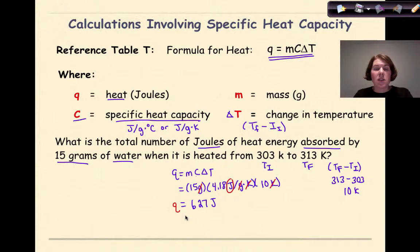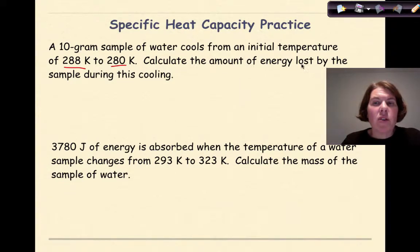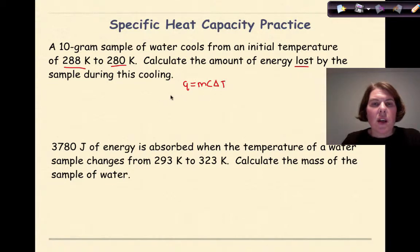The result is 627 joules of energy absorbed. Because this is a positive value, we note: positive value → energy absorbed. Next, Example 2: A 10-gram sample of water cools from an initial temperature of 288 K to 280 K. Calculate the amount of energy lost. We use q = mcΔT and solve for q.